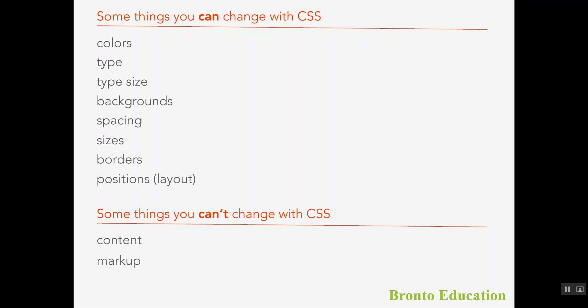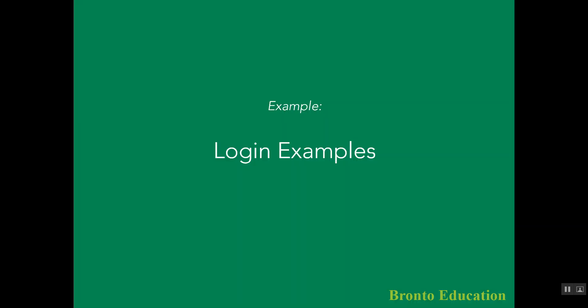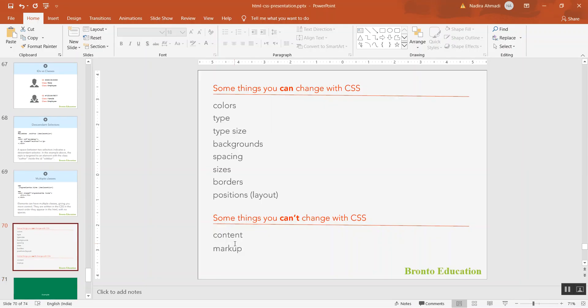Some things you can change with CSS include colors, font size, backgrounds, spacing, sizes, borders, and positions. However, content and markup cannot be changed through CSS — it gives only style. That was today's lecture. Next lecture we are going to go through the practical part. Please subscribe to our channel and share it with your friends — thank you.